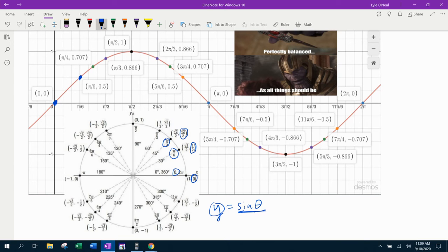At π/4, we're at square root of 2 over 2. And in my graph here, 0.707 is the decimal approximation of square root of 2 over 2. And we keep going. π/3, 0.866 is the decimal approximation of square root of 3 over 2 is our next point. And then when we get to 90 degrees, we're at a height of 1.